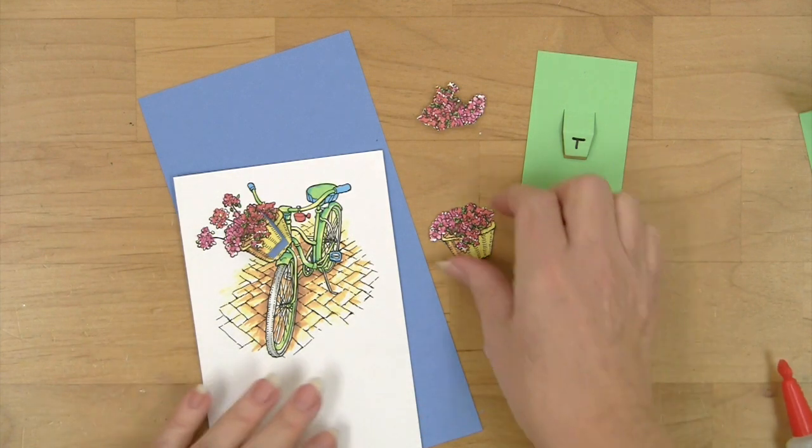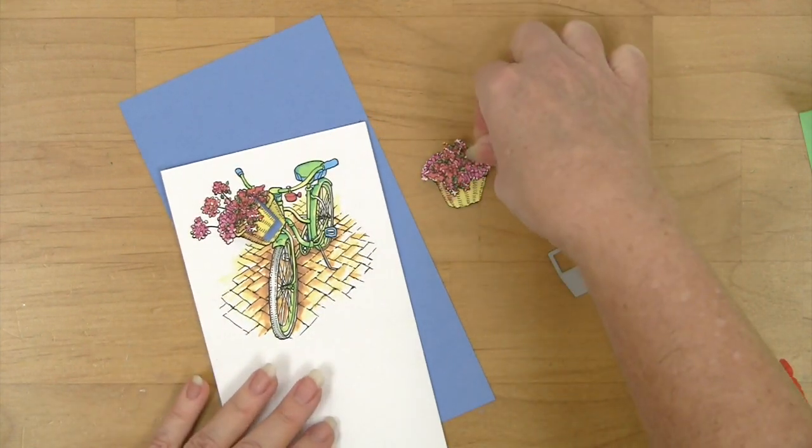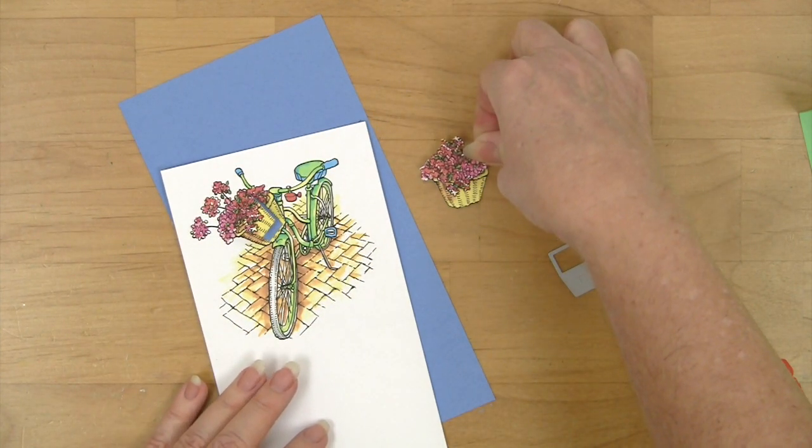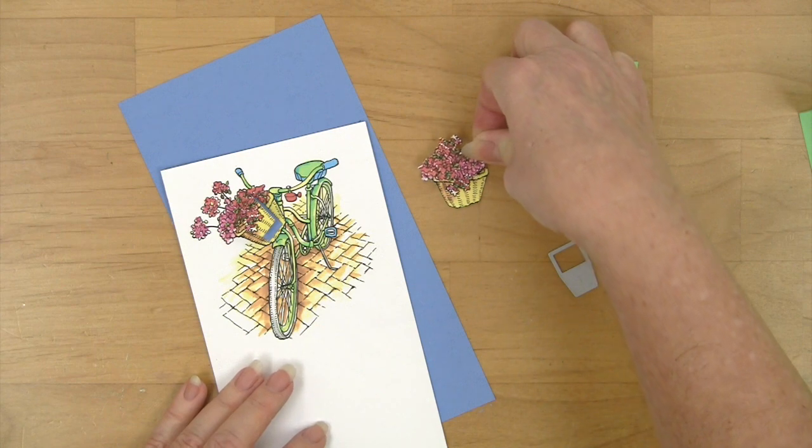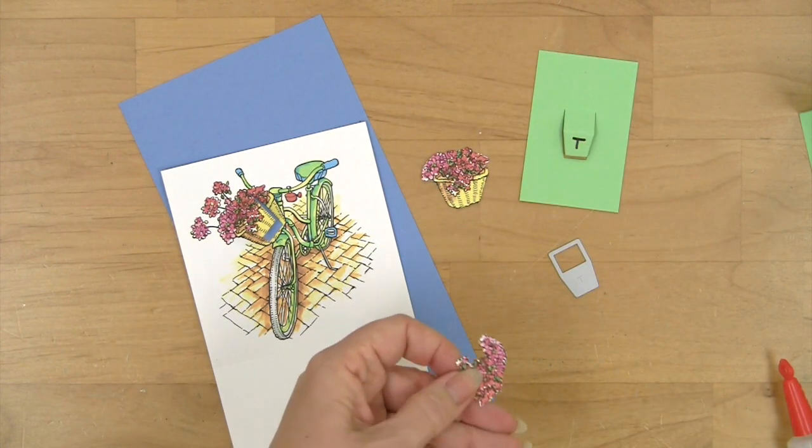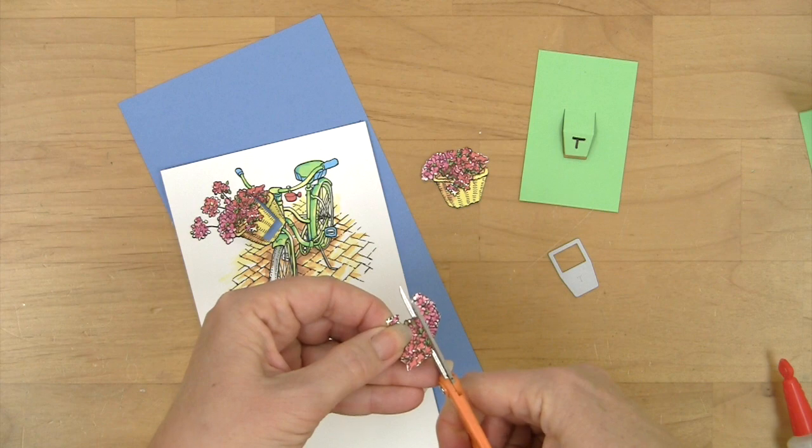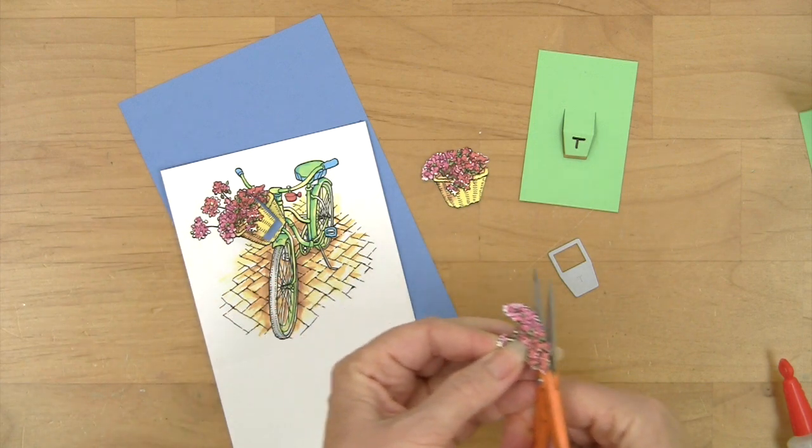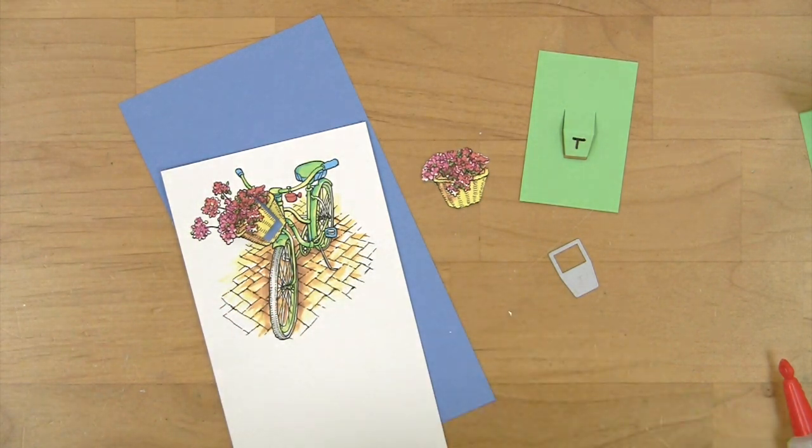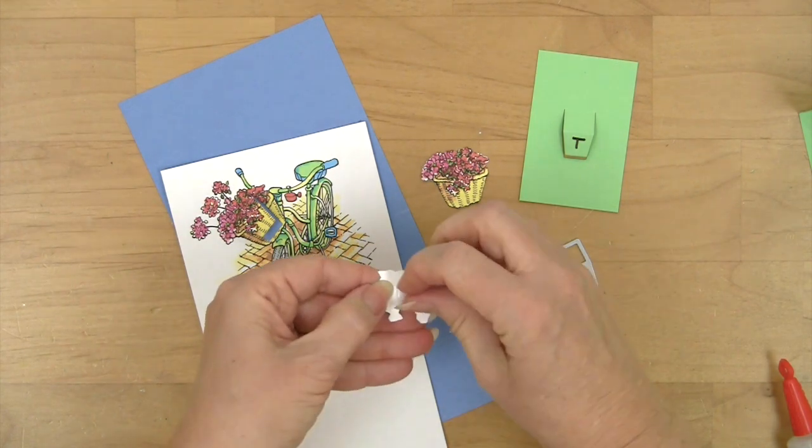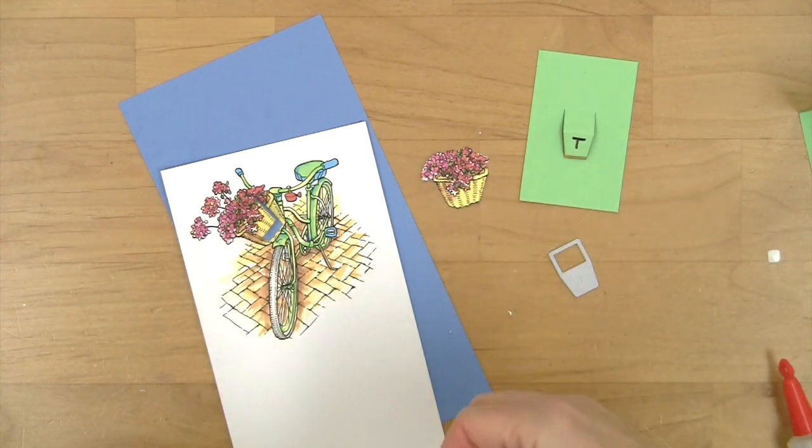basket and then I cut out another piece of just the flowers. I'll trim this just a little bit more here and then I've put a little pop-up square on the back